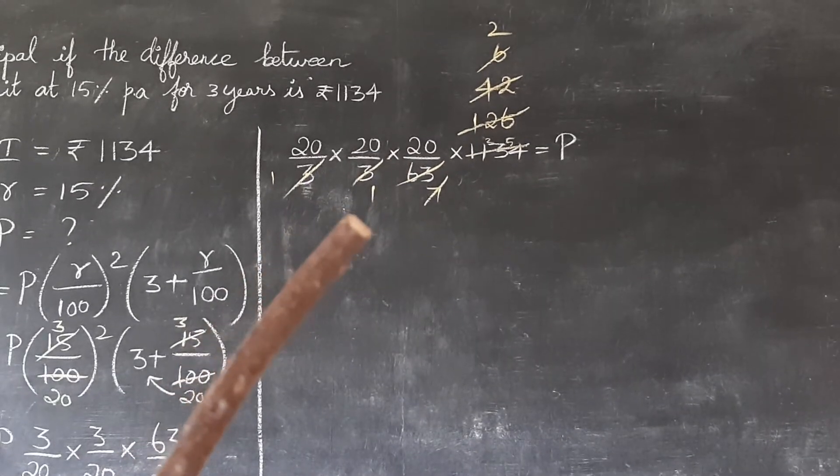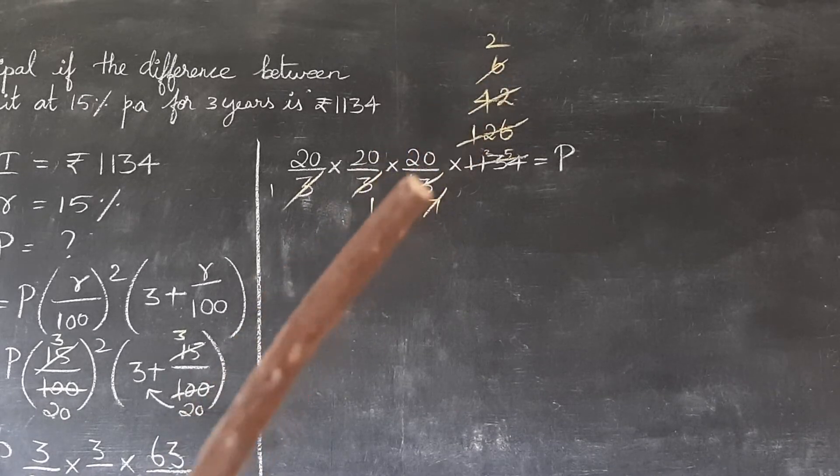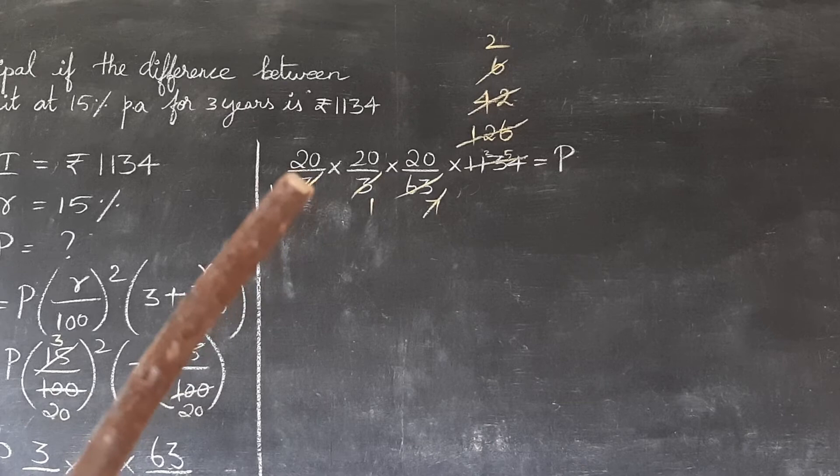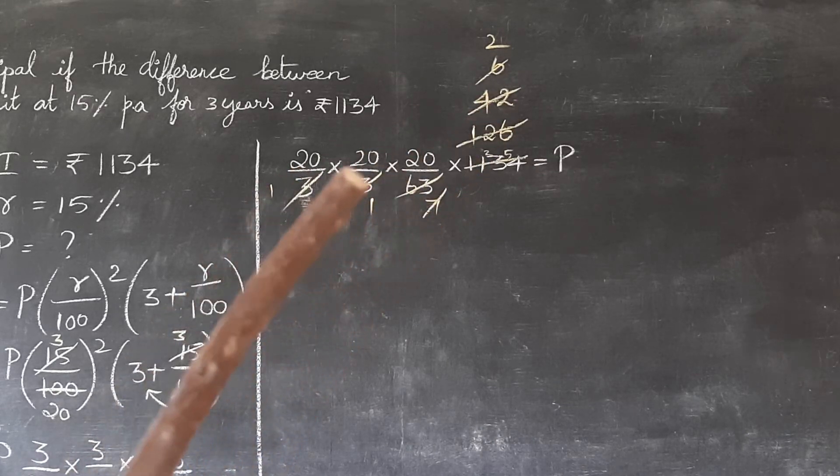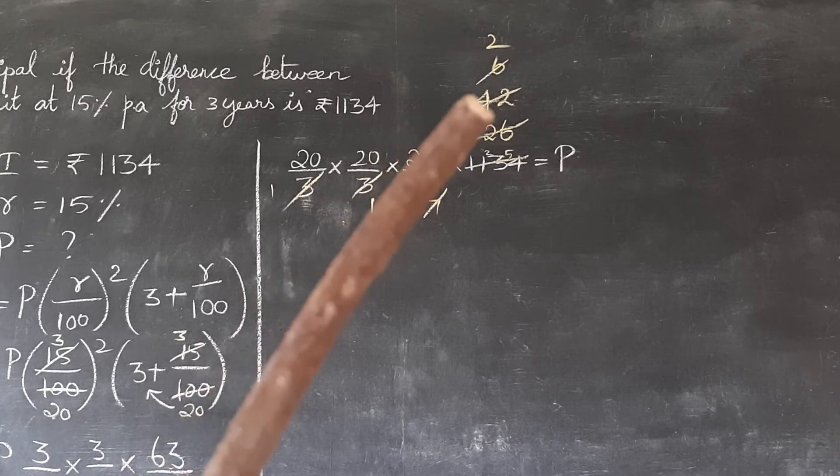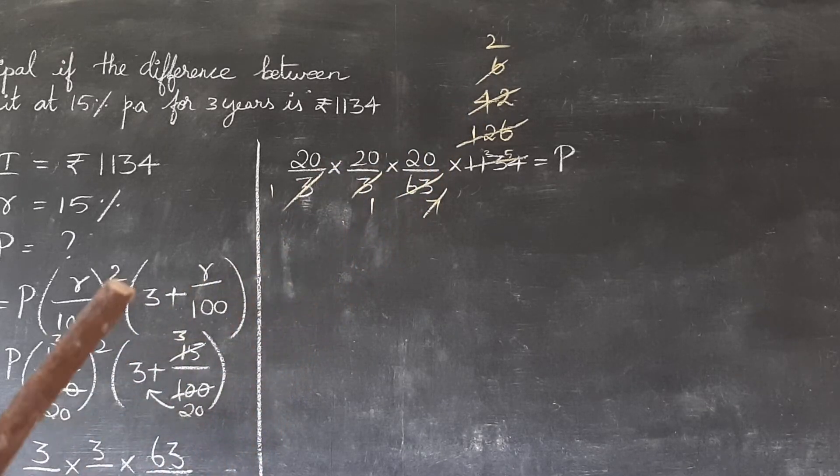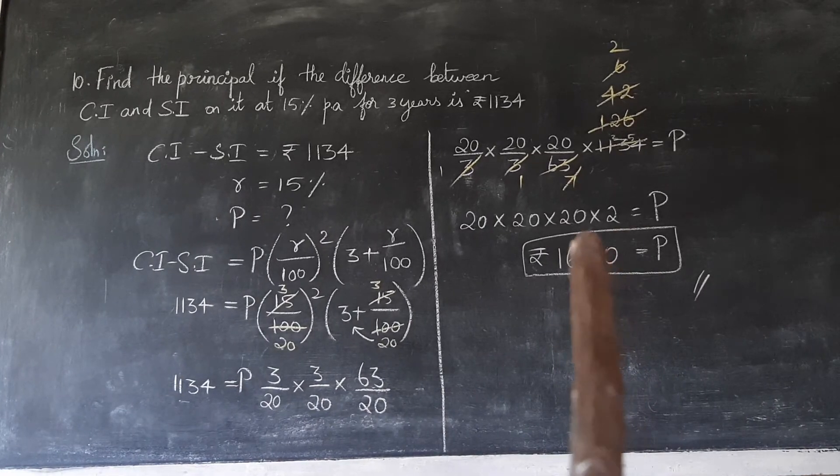Now multiply this: 20 into 20 into 20 into 2. What is 2 twos are 4, 2 fours are 8, 8 twos are 16, and add these three zeros. Now our answer is 16,000.